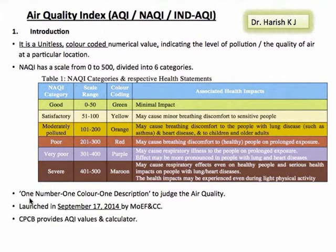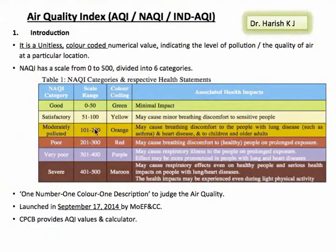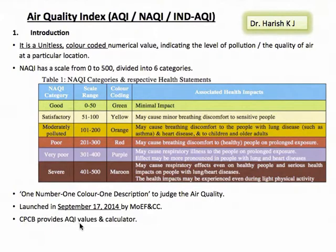Correspondingly, each of these categories is color-coded and assigned a description. This AQI acts as one number, one color, and one description — an all-in-one tool to judge air quality. Given any one of these, we can determine the other aspects. It was launched on September 17, 2014 by the Ministry of Environment and Forests and Climate Change, and is monitored by the Central Pollution Control Board. The CPCB website provides real-time AQI values for certain cities and has also published an online calculator — by feeding air monitoring data of a location into this calculator, one can get the AQI values for that location.